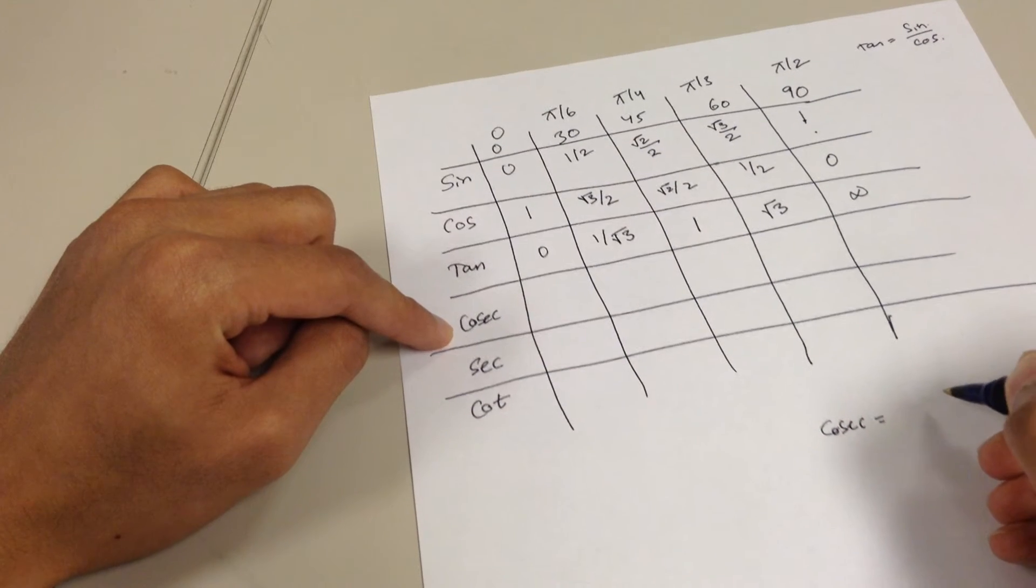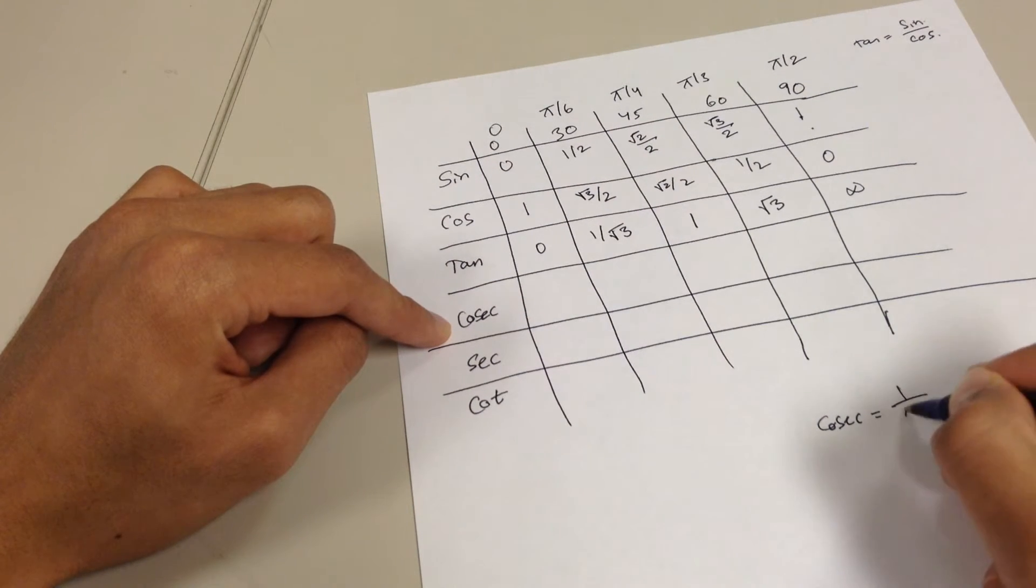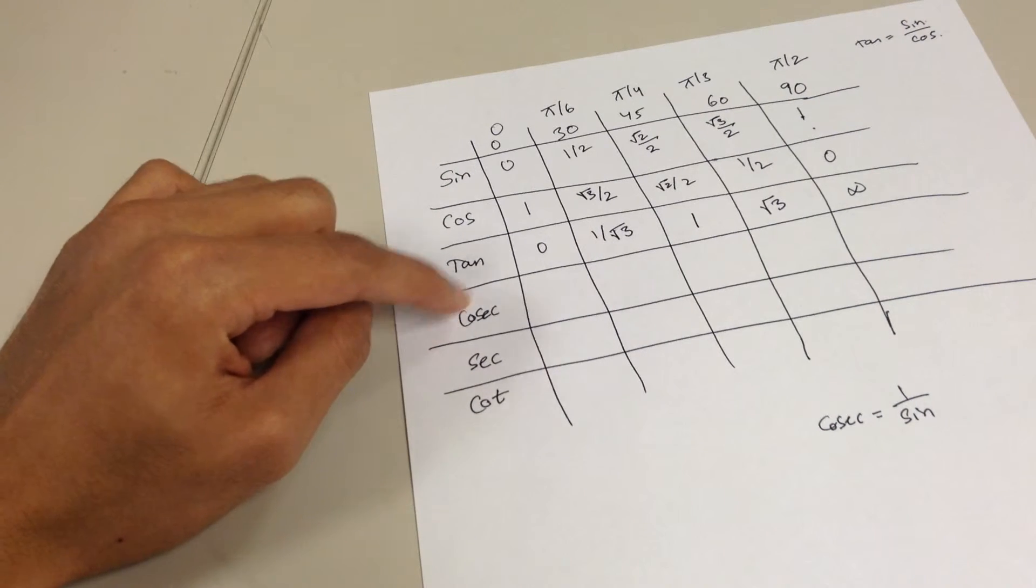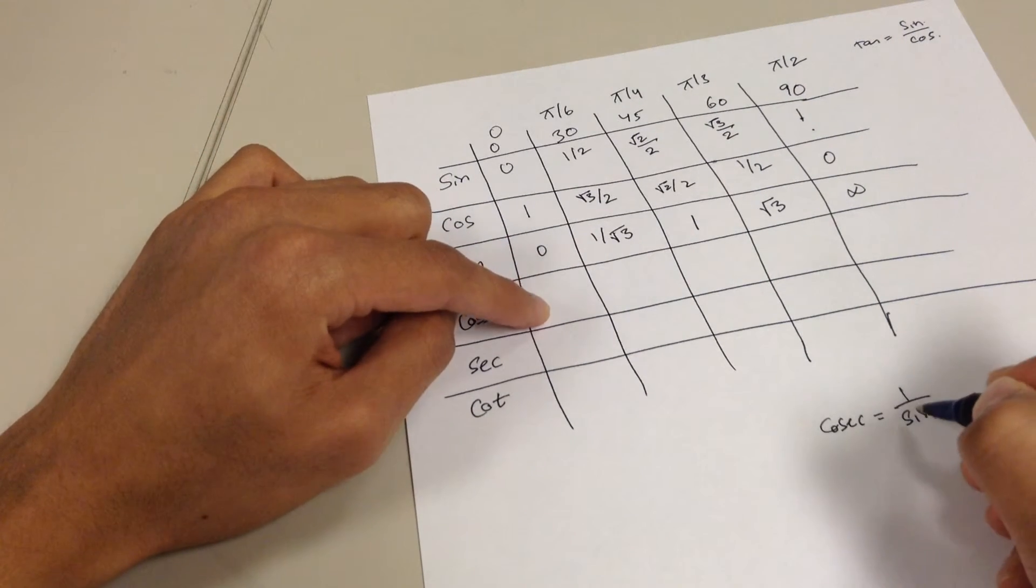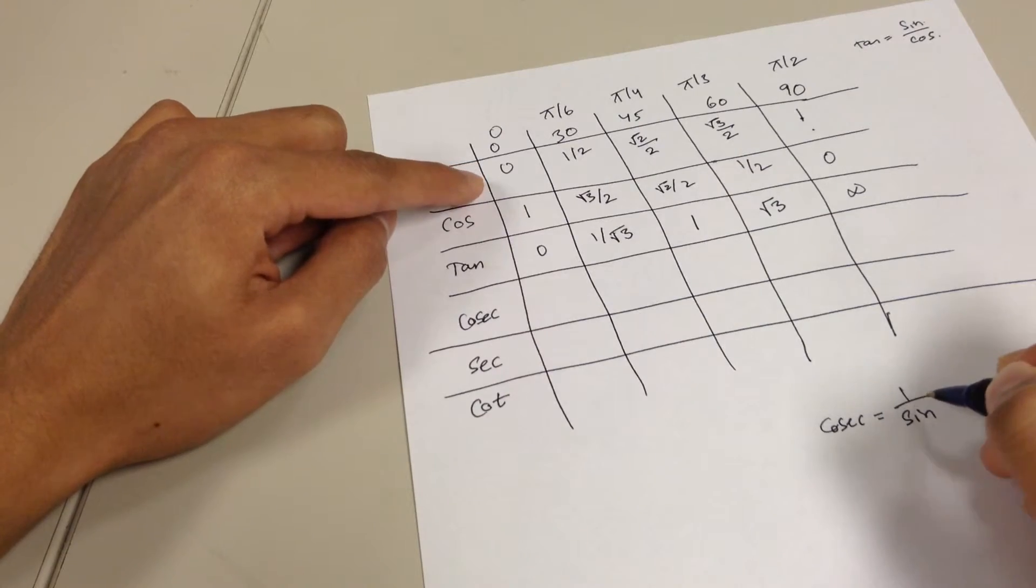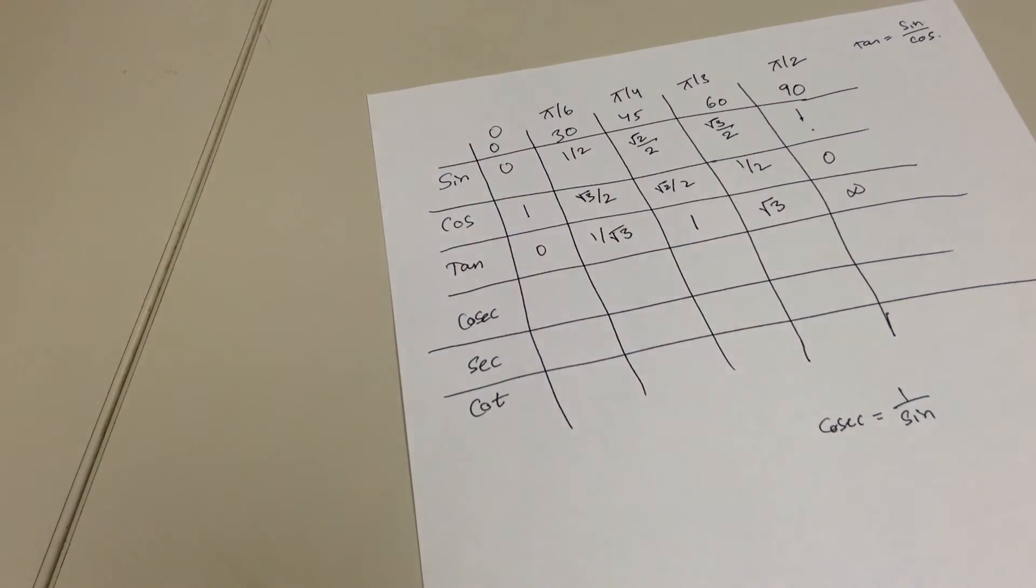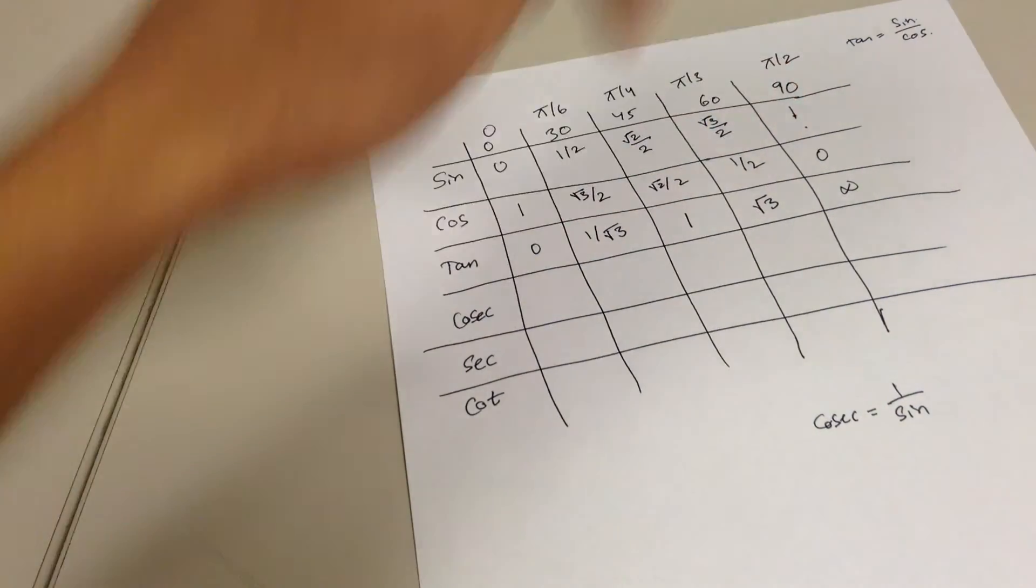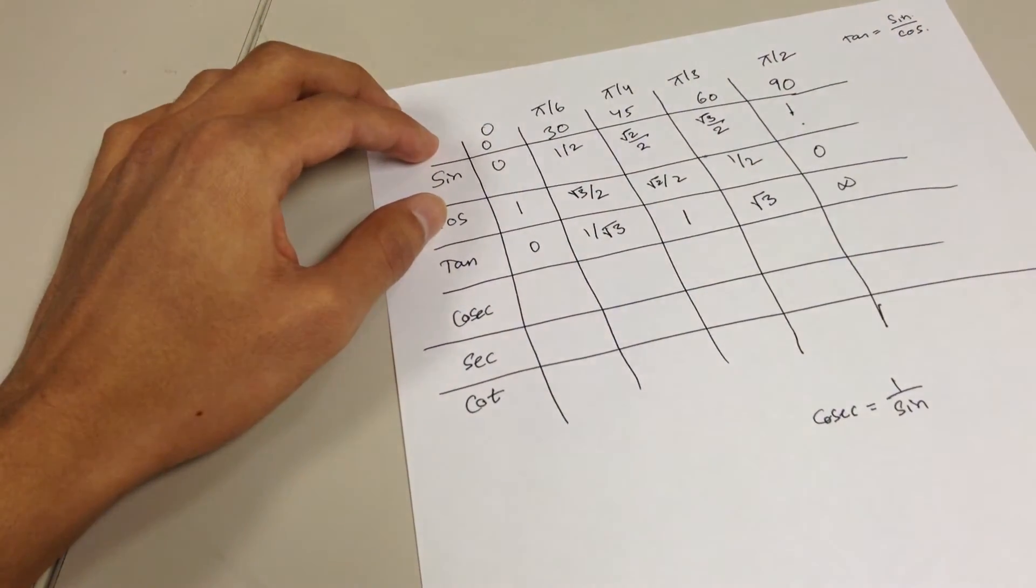it's going to be this way. Cosecant is the same thing as one over sine. So what do you think you should do if you want to do cosecant of zero? Well, you just take the sine values and then put them over one. So one over zero, one over half, one over this, one over this, and one over that. And then do the same thing, fill it out, and then see what you get.